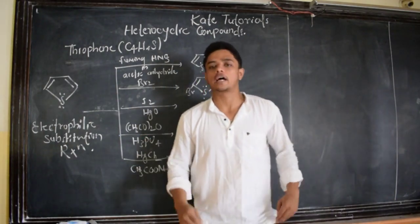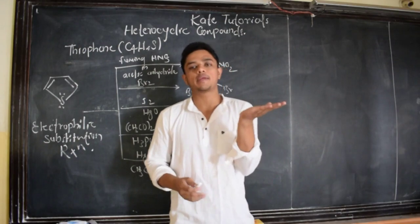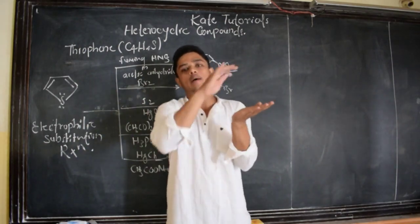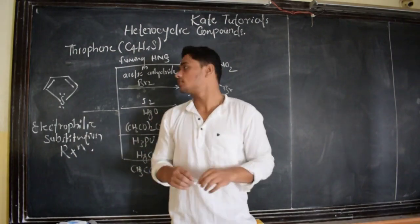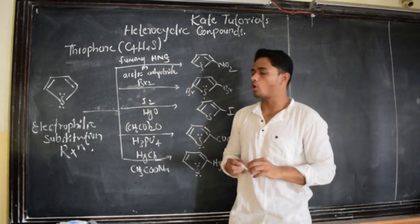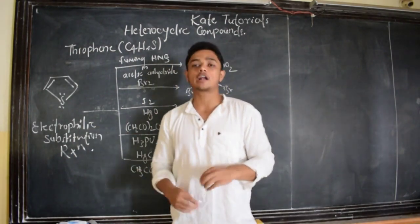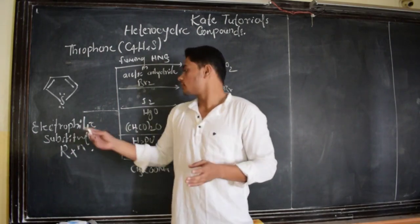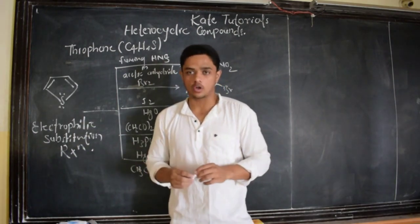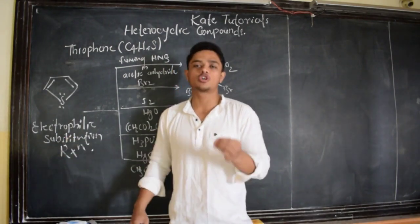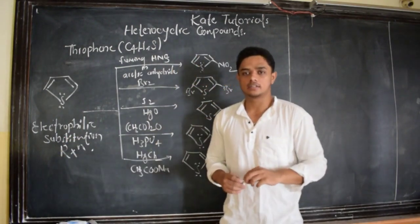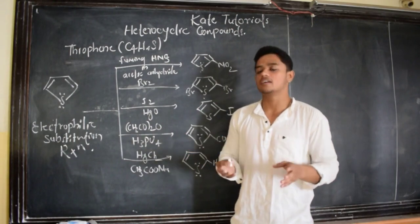Since thiophene is rich in electrons, it will be in plane and the pi electron cloud will be above and below. Because of which it is electron rich, the density of electrons is more. These electrophiles which are electron deficient try to get those electrons, so they are going to attack. But they will substitute hydrogen and attack, they are not going to add to the compound.